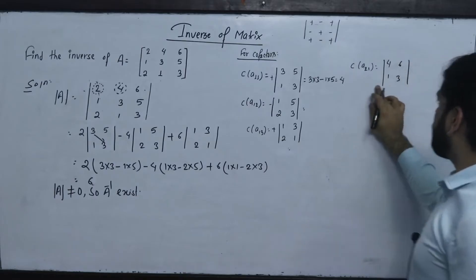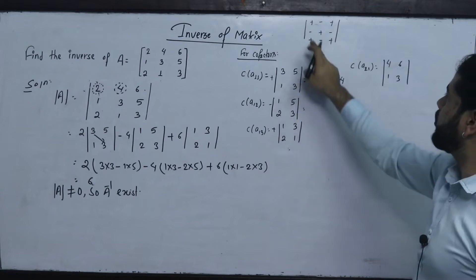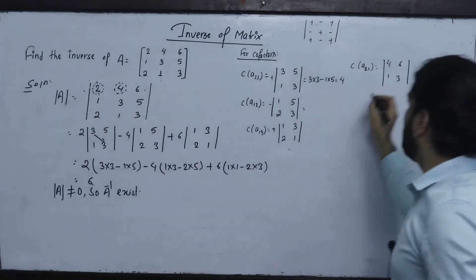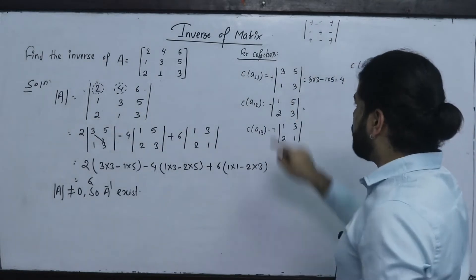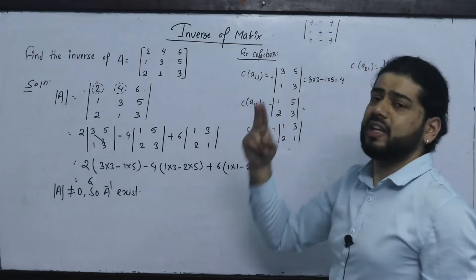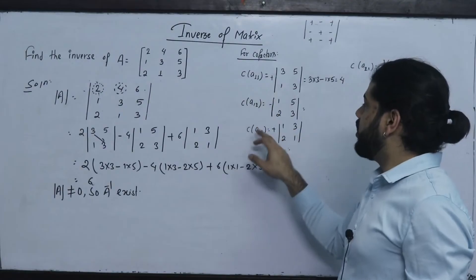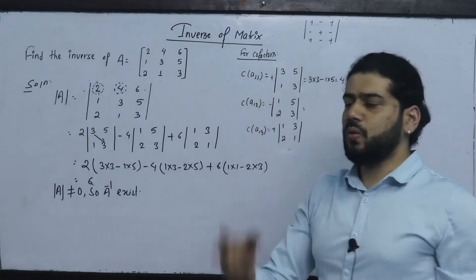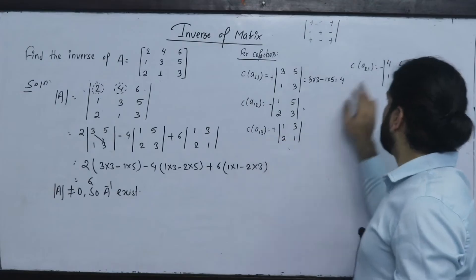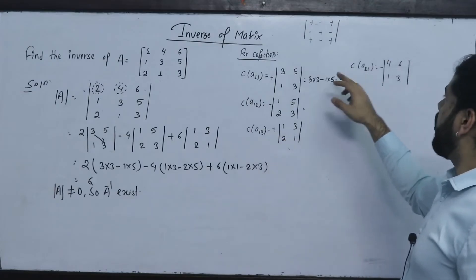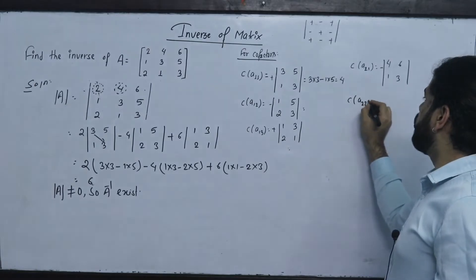Now for [4, 6; 1, 3]: the sign pattern is plus, minus, plus. We can see that 1+1=2 is even so plus, 1+2=3 is odd so minus, 1+3=4 is even so plus, 2+1=5 is odd so minus. C(2,1) uses odd position.